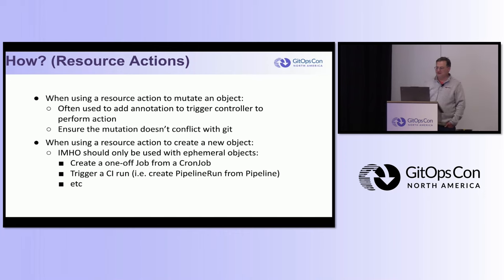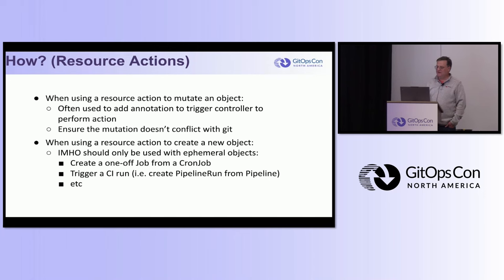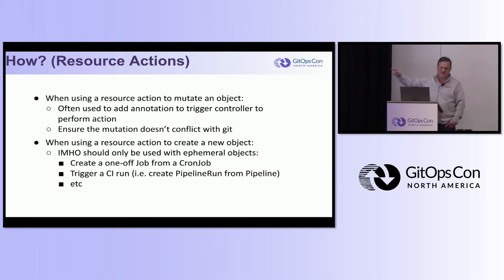When using a resource action to mutate an object - like adding an annotation - that's fine. But be aware that other mutations might conflict with what's in Git: Argo might notice the object is no longer in sync. Also, you can actually create brand new resources in a resource action - I generally don't recommend this. It should only be used with ephemeral objects: creating a one-off job from a cron job, or in Tekton creating a pipeline run. Those are fine. But you shouldn't create permanent things that way - that should be in Git and managed by GitOps, not click-ops.